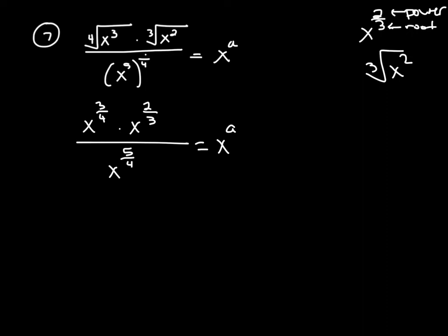When you're multiplying two terms with the same base, all you're going to do is add the exponents. So you're going to add 3/4 and 2/3. When you add them, you wind up getting 17/12, so I'm going to write this as x to the 17/12 over — and just bring everything else down. That's supposed to be an 'a' — it looks like a 9.